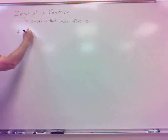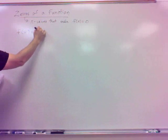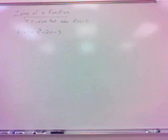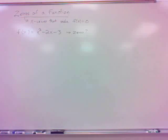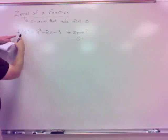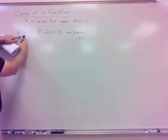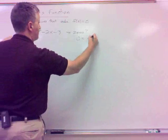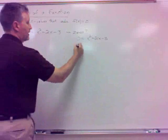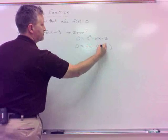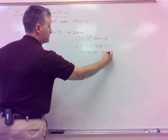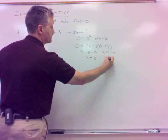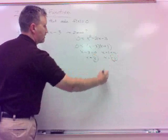For example, if I have f of x equal x squared minus 2x minus 3, what are the zeros? The zeros are what make f of x equal zero. We set f of x equals zero and then factor: x minus 3 times x plus 1. Set each factor to zero — add 3, subtract 1 — so our zeros are 3 and negative 1.